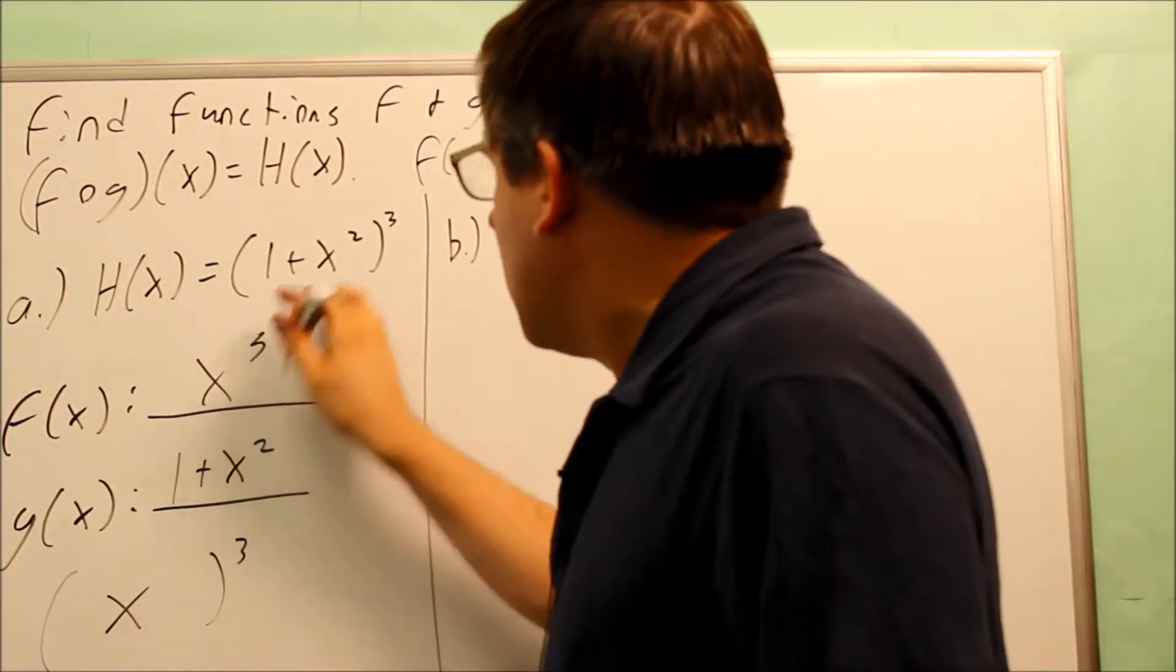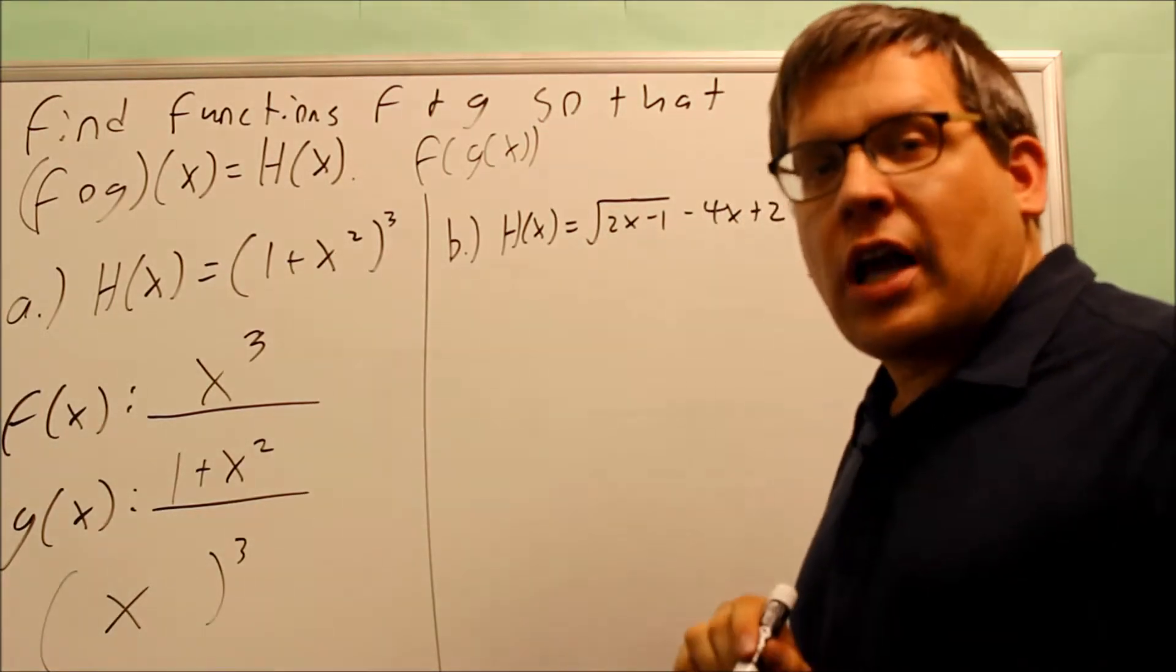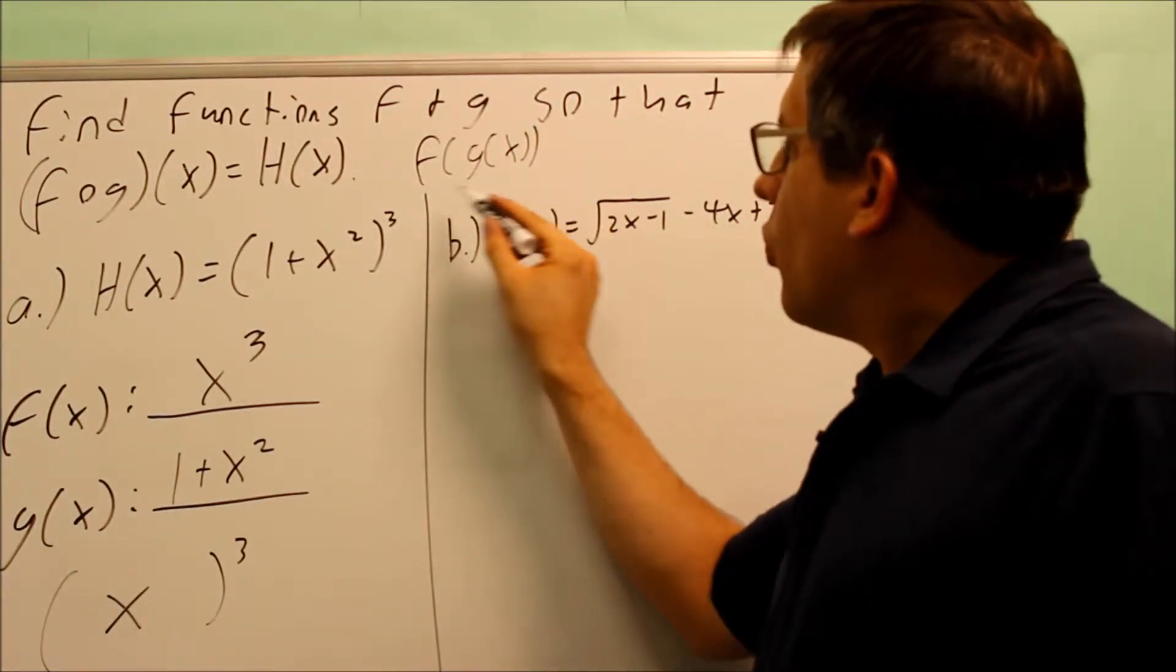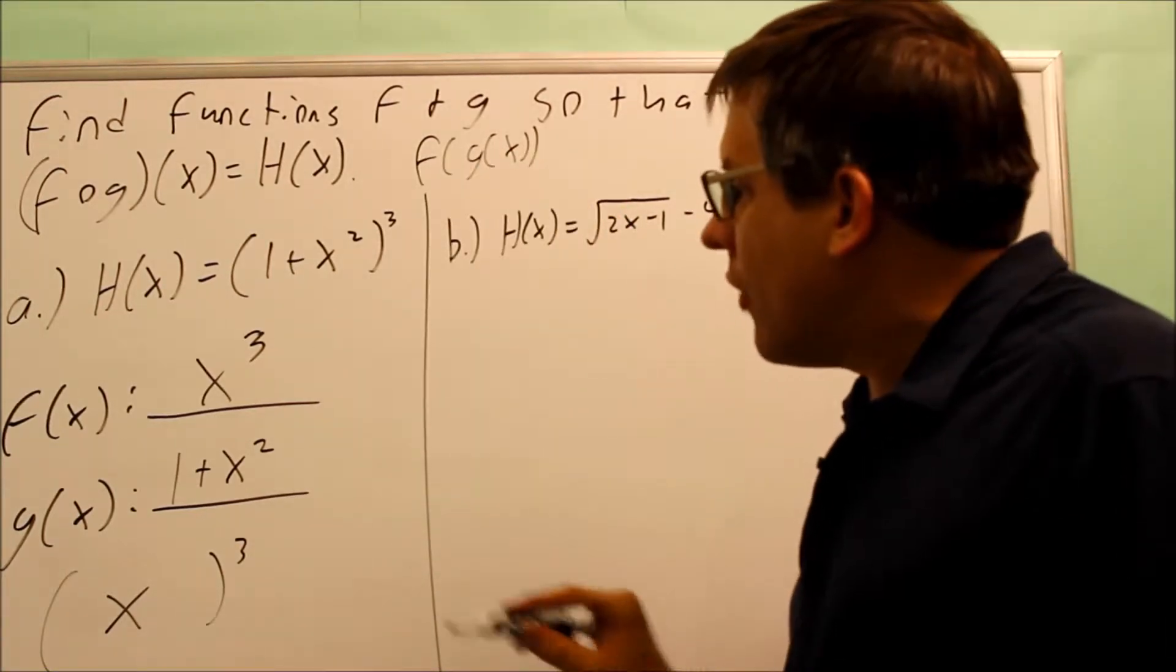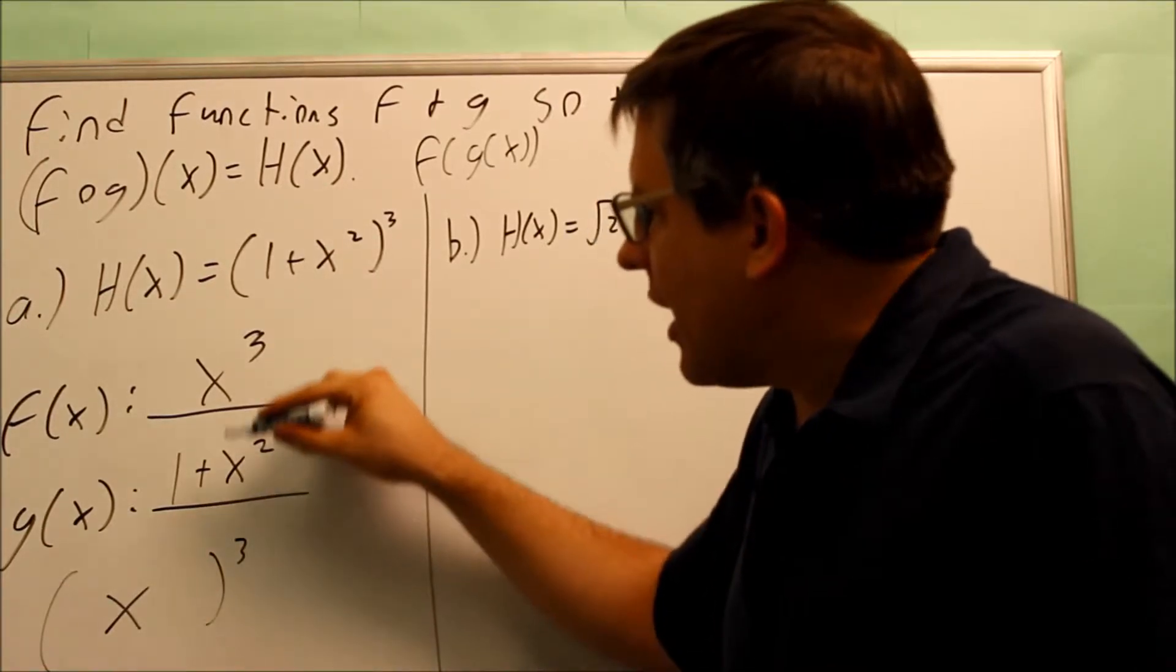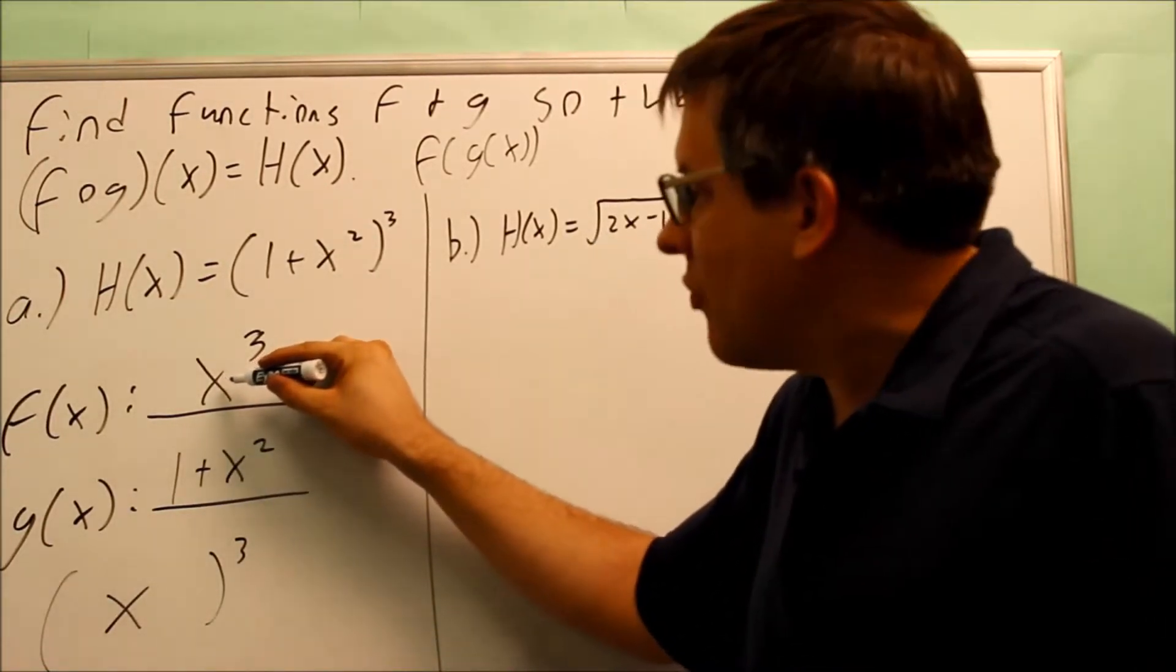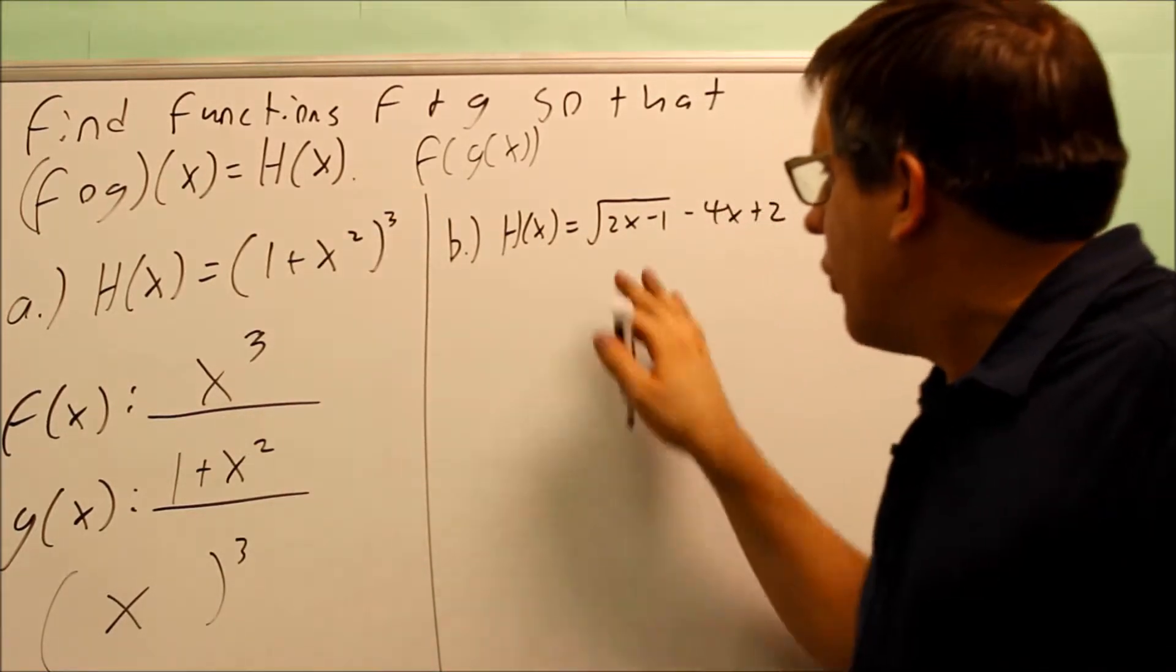We can check to see if we got the right answer because we can actually go ahead and do this. We have f of g of x—that means we're going to put the g into the f. Here's my g right here, 1 plus x squared. I would put that into here in place of x, and if I do, I would in fact get this as a result.